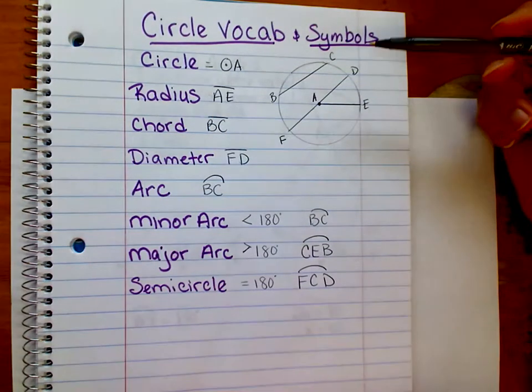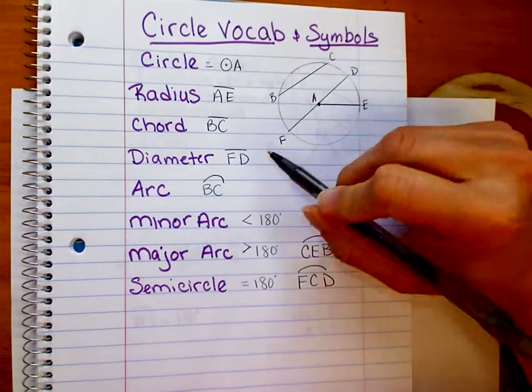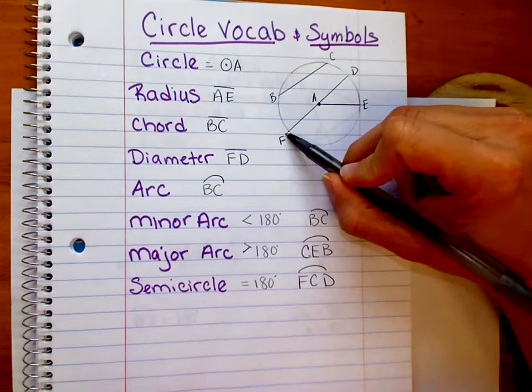A diameter is a special chord. It's a chord that goes through the center of the circle. We don't write the A there though. You could just say FD.